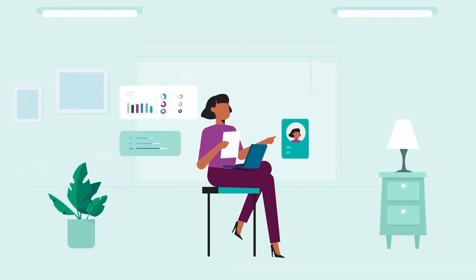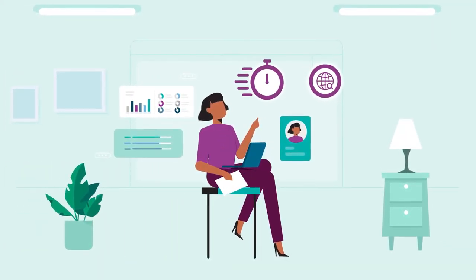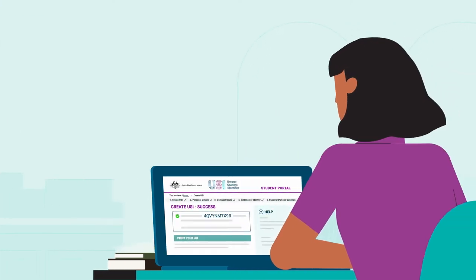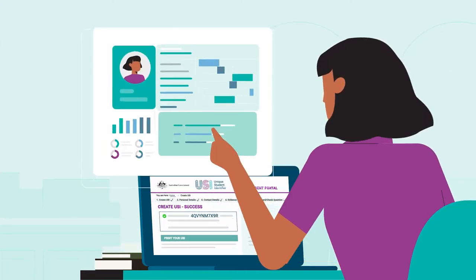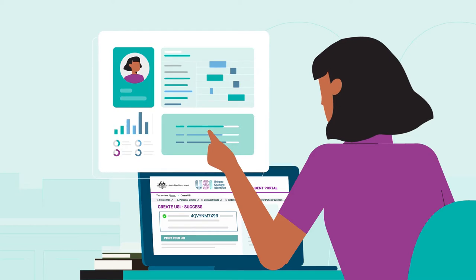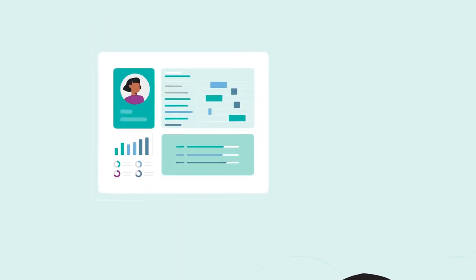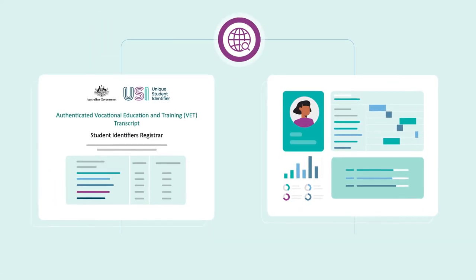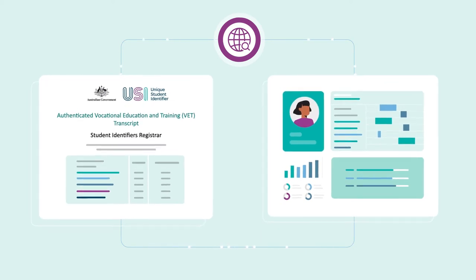Are you looking for a way to demonstrate your qualifications quickly and easily online? A unique Student Identifier, or USI, makes it easy for students to access and share their training records. The USI keeps your national training records together online with a Vocational Education and Training, or VET, transcript.